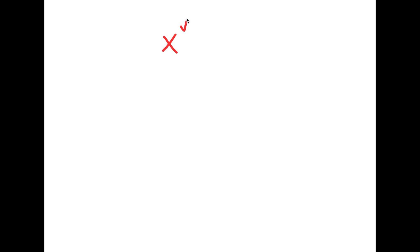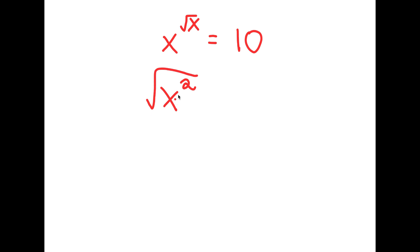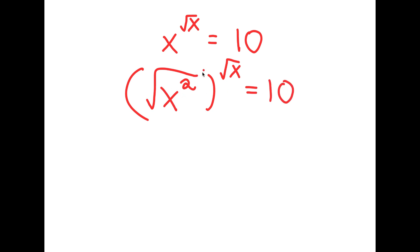In this problem, I have x to the power of the square root of x is equal to 10. To solve this, I'm going to rewrite this as the square root of x squared, to the power of the square root of x, is equal to 10. And the square root of x squared is the same thing as x, so that's why I'm allowed to do that.